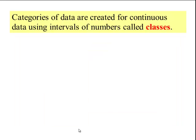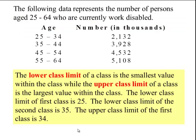Lesson objective number three: Categories of data are created for continuous data using intervals of numbers called classes. Here's an example. The following data represents the number of persons aged 25 to 64 who are currently work disabled. So we have the age and we have the number in thousands. This would be a class: ages 25 to 34, and there's 2,132 times a thousand people. The next class would be 35 through 44, and so on and so forth. There's a total of four classes here with the corresponding frequency.